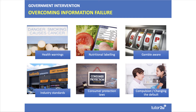Information failure can lead to market failure because it can lead to sub-optimal choices being made, negative or positive externalities creating second-round market failure, and crucially an inefficient allocation of scarce resources. So there is a case for some form of government intervention to help overcome information failure. It's worth adding one or two more examples using this slide to your revision notes.